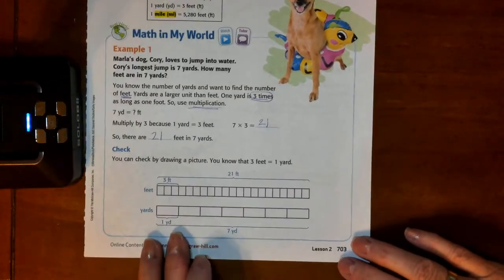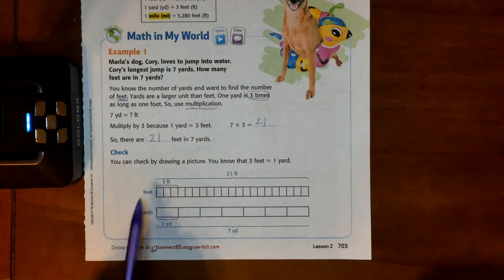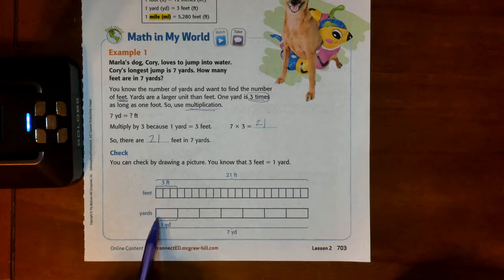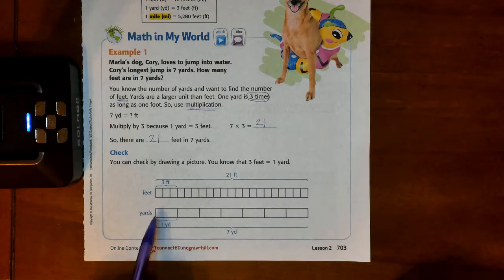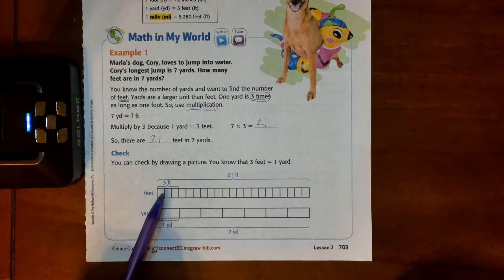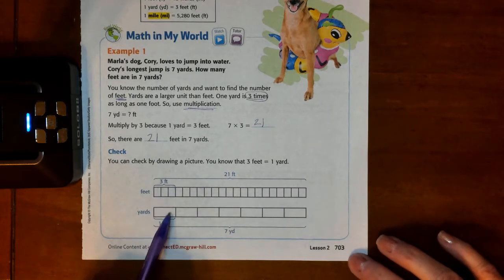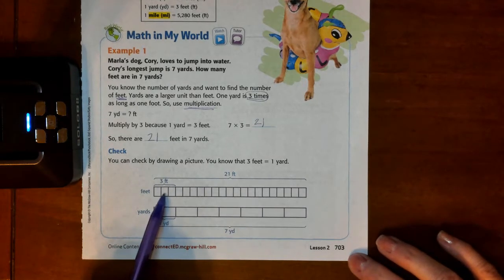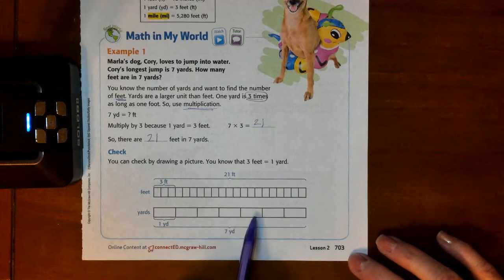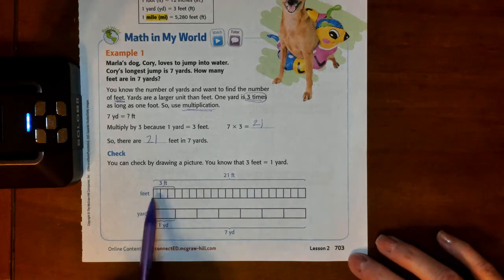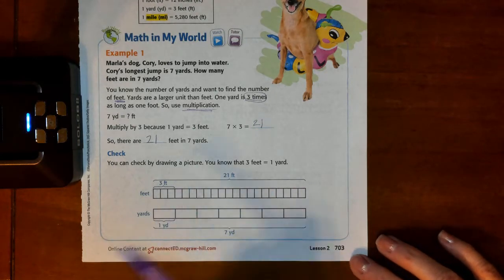We can check our work by drawing a picture. They've shown us 1 yard in just this tiny little rectangle and then they've divided that same section into 3, because 1 yard is the same as these 3. And so they did that for all 7. So you could do the same and then you could count them all up. Does that make sense?